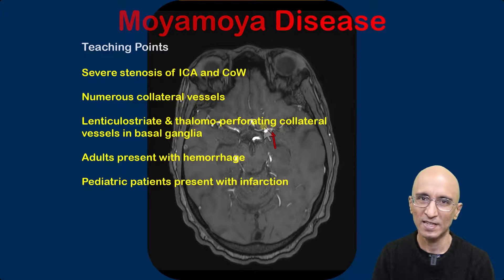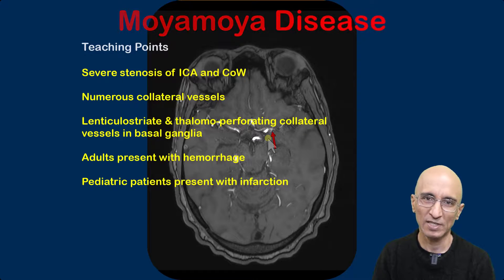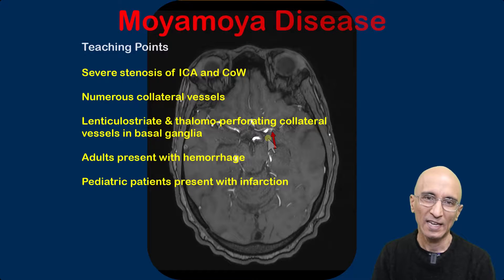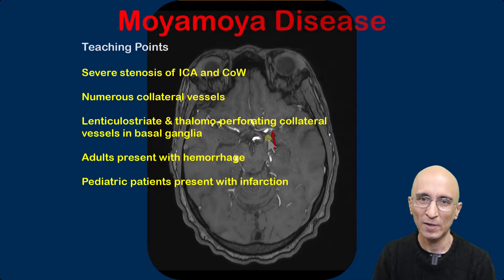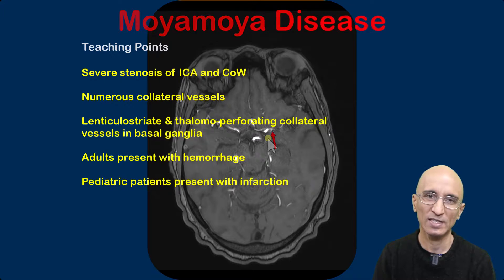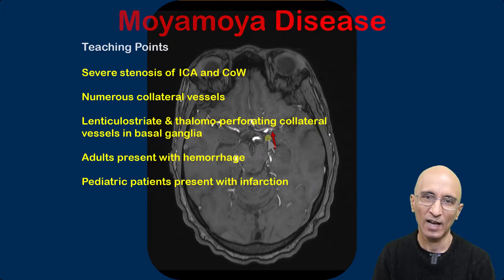These collateral vessels are seen in the basal ganglia region and can easily rupture and cause hemorrhage in the basal ganglia region, as seen in this patient. In pediatric patients, Moyamoya disease usually presents as infarction, whereas in adults, Moyamoya disease usually presents as hemorrhage due to the rupture of collateral vessels.